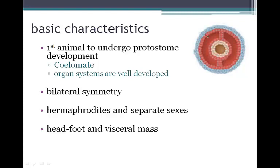Molluscs were the first animals to undergo protostome development. In protostome development, during embryonic development, the dent forms the mouth while the anus is later formed. This allows for the development of a coelom, which in turn allows for organ systems to continue to develop. These organ systems now have space and are able to be well-developed.